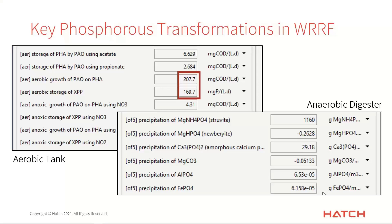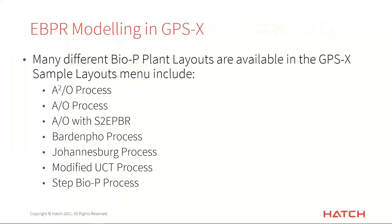As another example, here's the anaerobic digester. Right-click, go to Output Variables, Mantis 2 Rates menu, and you can see what is being precipitated in the digester. Most numbers are insignificant, except for the struvite precipitation rate, which is the big number. Those are handy tools for digging around and understanding what's going on in your system.